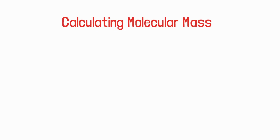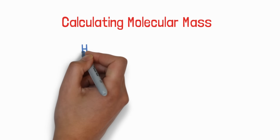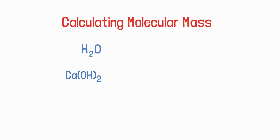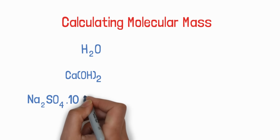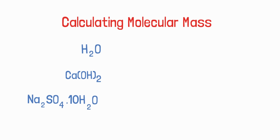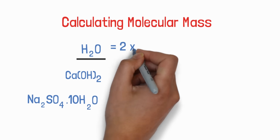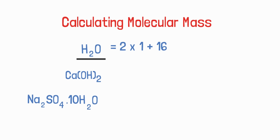Now let's look at calculating molecular mass, using water, calcium hydroxide, and Na₂SO₄·10H₂O as examples. If you can calculate the molecular mass of these three molecules, you can calculate any type. Let's start with water. To find molecular mass, we add the mass of every atom present in the molecule. Hydrogen's atomic mass is 1 and oxygen's is 16. Water has 2 hydrogen and 1 oxygen, so its molecular mass is (2 × 1) + 16 = 18 U.